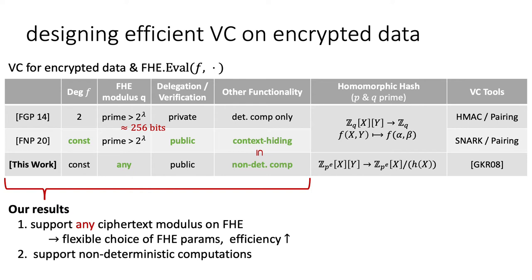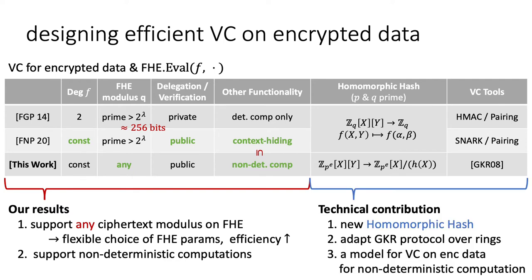We also generalized the previous solution so that we can verify non-deterministic computation on encrypted data. Technically, the main point is the introduction of our new homomorphic hash functions, which will be explained later. We also adapted the GKR protocol over rings to verify the FHE computation, and provided a model for VC on encrypted data for non-deterministic computation.